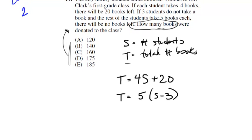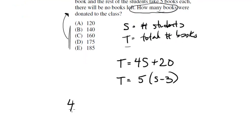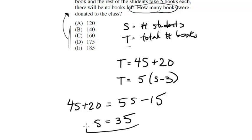I think it's easy in this case since we've got t equals and t equals. Let's just set them equal and go from there. So we're going to get 4s plus 20 is equal to 5s minus 15. Do a little rearranging, we're going to get s equals 35 when you rearrange that. So the number of students equals 35. That's not what we want, we want the number of books. So we can just plug this in to the top one here. Four times 35 is 140, and 140 plus 20 is 160. So the answer to this one is C.